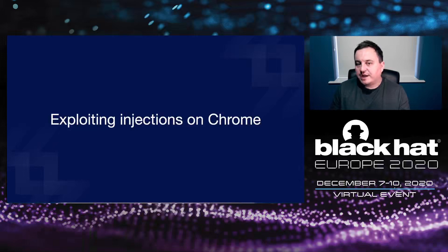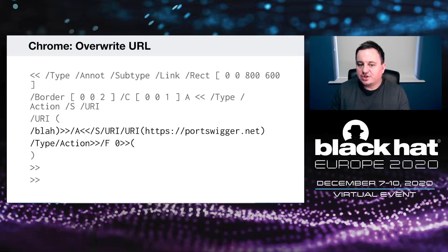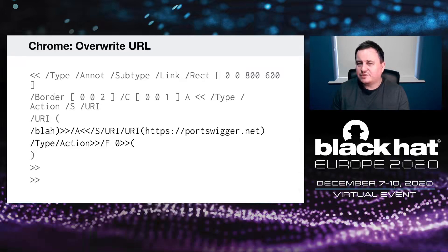I was pleased with exploiting Acrobat but wanted to exploit Chrome too. My existing injections all failed on Chrome. I tried all the existing vectors and they didn't work. Then I tried to overwrite the URL — instead of executing JavaScript, I simply injected an additional annotation in the annotations array, specified a URI and an external URL. This allowed me to overwrite the existing action with a new URL, but we can't exfiltrate the PDF from that alone.